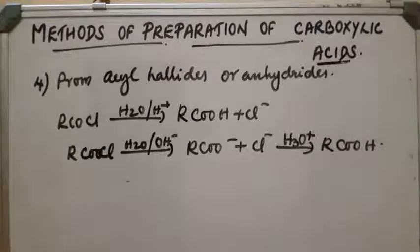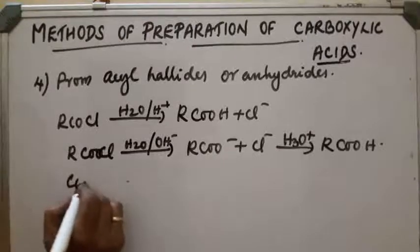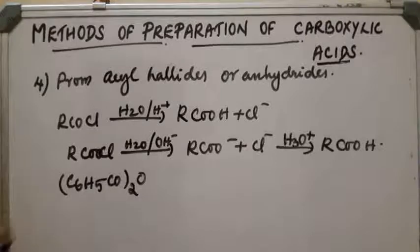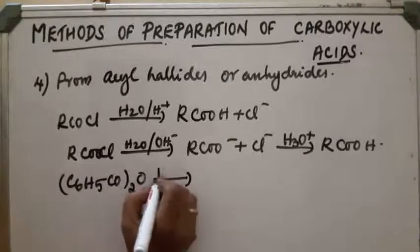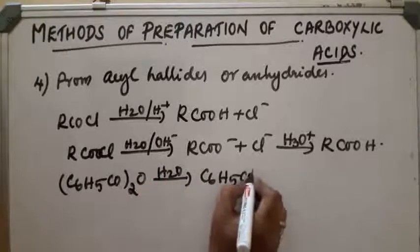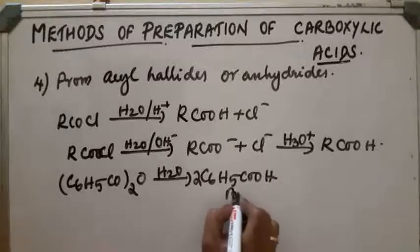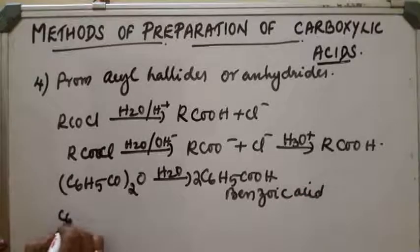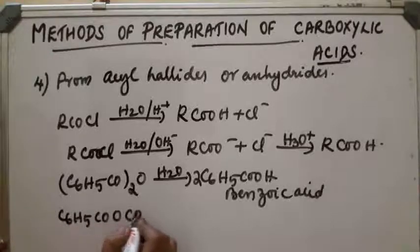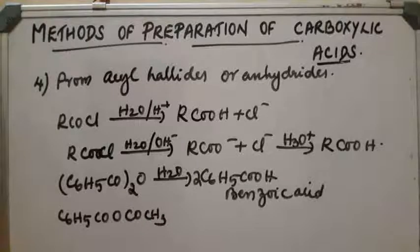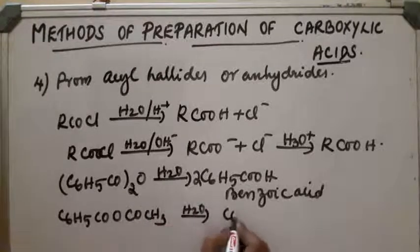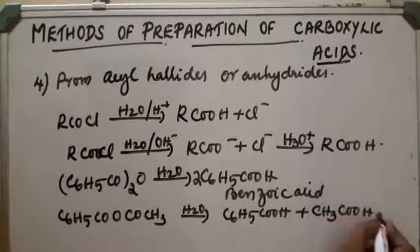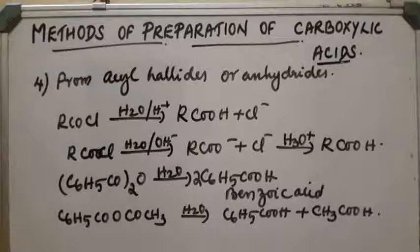In the case of anhydrides: for example, C6H5CO-CO-O (benzoic anhydride) on hydrolysis gets converted into C6H5COOH (benzoic acid). Another example: a mixed anhydride with COOCOCH3 on hydrolysis gives C6H5COOH plus CH3COOH — different acids are obtained, benzoic acid and acetic acid.